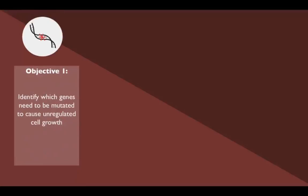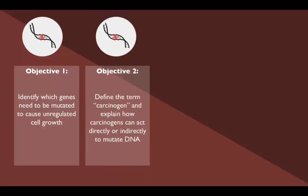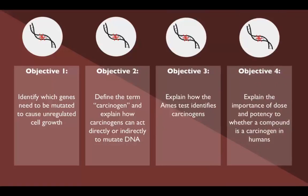At the end of the lesson, the student should be able to identify which genes need to be mutated to cause unregulated cell growth, define the term carcinogen and explain how carcinogens can act directly or indirectly to mutate DNA, explain how the Ames test identifies carcinogens, and explain the importance of dose and potency to whether a compound is a carcinogen in humans.